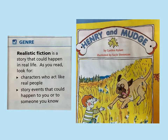This week, we have been listening to and talking about the read aloud Henry and Mudge by Cynthia Rylant. We talked about how this is a realistic fiction book — a story that could happen in real life. We've looked for characters who act like real people or animals and events that could happen to you or someone you know. This is similar to the stories we read in our reading groups: made up, fiction, but realistic.